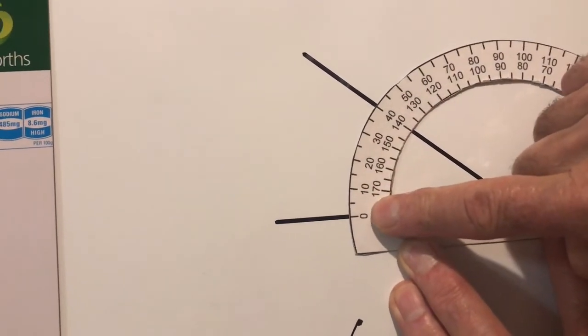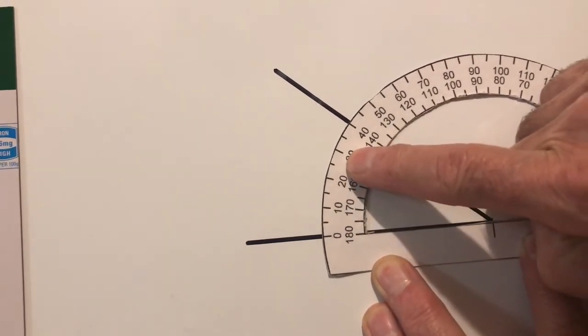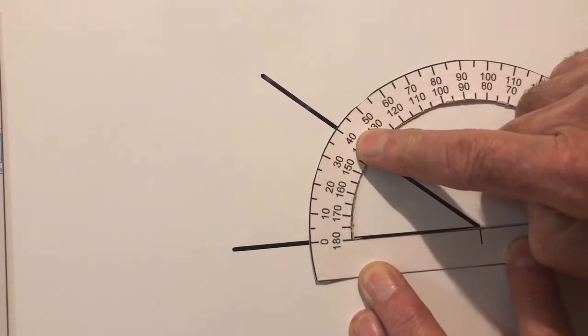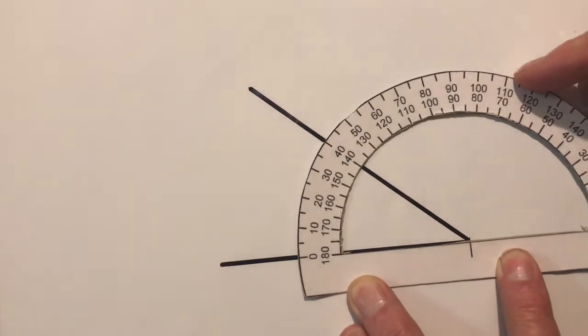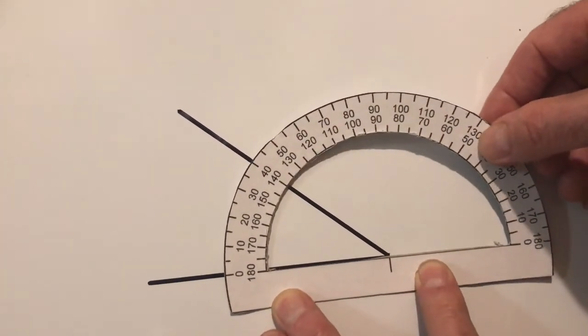I have a look I've got zero degrees, 10 degrees, 20 degrees, 30 degrees and I'm at about 40 degrees. That is my internal angle. This is less than 90 degrees and is called an acute angle.